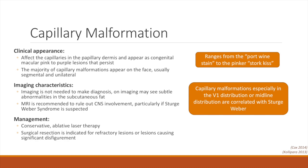On ultrasound, a capillary malformation will appear as subtle abnormalities in the subcutaneous fat. MRI is not indicated for the diagnosis of capillary malformation, but may be performed if CNS involvement is suspected, such as in Sturge-Weber. Capillary malformations typically do not require treatment, although laser ablation may be performed to improve the coloration of the lesion if it is disfiguring. For refractory lesions, surgical resection may be performed.